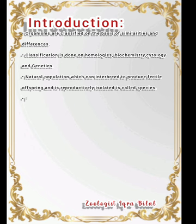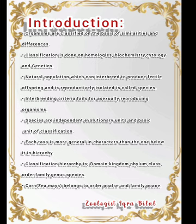Organisms are classified on the basis of similarities and differences. If you are asked what is the basis of classification, the answer is similarities and differences. Classification is done on homologies, biochemistry, cytology and genetics — that is the modern approach. A natural population which can interbreed to produce fertile offspring and is reproductively isolated is called a species. Fertile offspring means those offspring which can further produce their own offspring. Interbreeding criteria fails for asexually reproducing organisms because in asexual reproduction organisms do not interbreed; they reproduce by binary fission. Species are independent evolutionary units and the basic unit of classification.